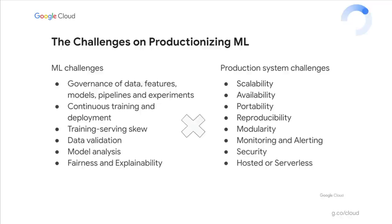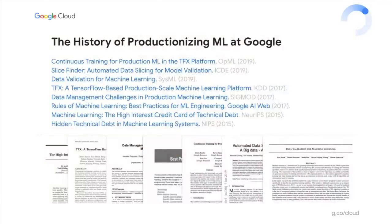You also have to think about the continuous training pipeline, the training-serving skew, data validation before starting to train the model, and analysis after training. You also have to think about machine learning fairness and explainability. These problems are unique to machine learning systems and tightly coupled to DevOps challenges. We have been solving these problems for the last 15 to 20 years and published many papers describing all the learnings and experiments at Google.